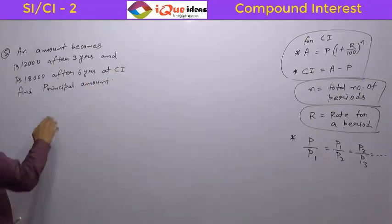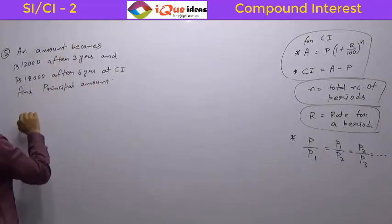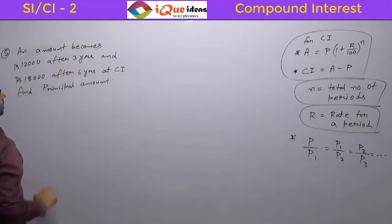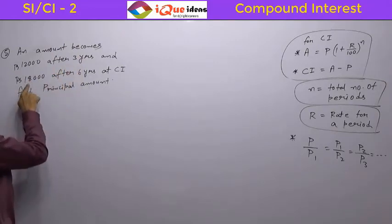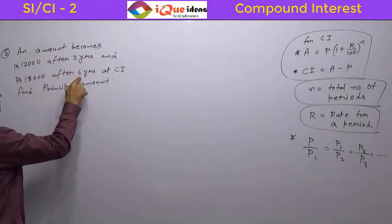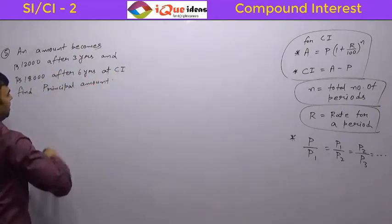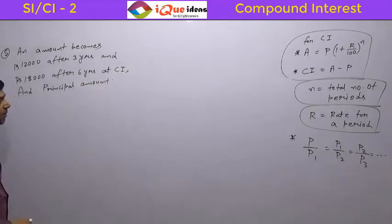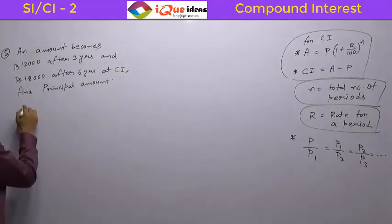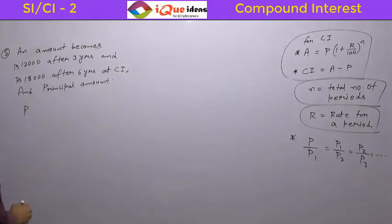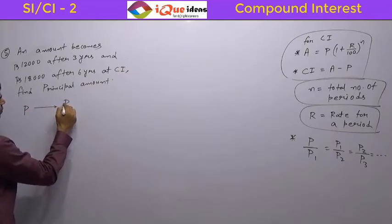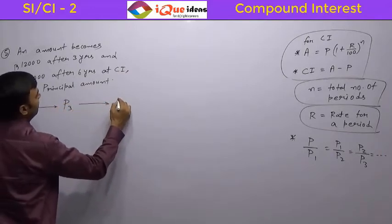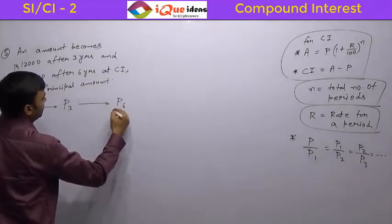This question says an amount becomes Rs. 12,000 after 3 years and Rs. 18,000 after 6 years at compound interest. Find the principal amount. So, let's say the principal amount is P. After 3 years the amount should be P3, and after 6 years the amount should be P6.